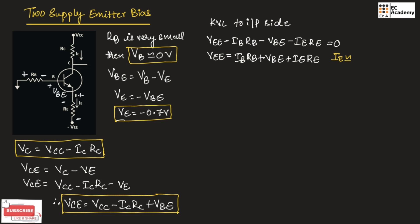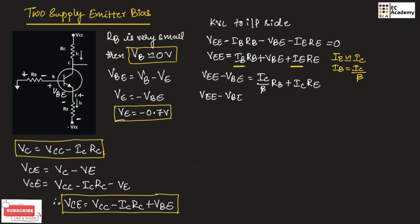We know Ie is approximately equal to Ic, so we can replace Ie with Ic. Also, Ib·Rb is equal to Ic divided by beta, so we replace Ib·Rb with Ic/β. Taking Vbe to the left-hand side: Vee minus Vbe is equal to Ic·(Rb/β plus Re). Therefore, Ic is equal to (Vee minus Vbe) divided by (Rb/β plus Re).